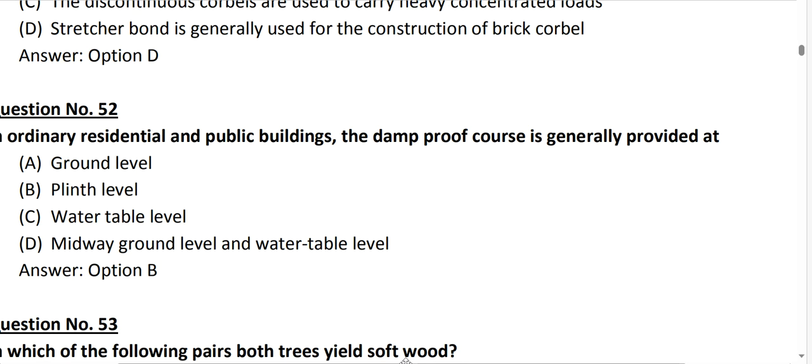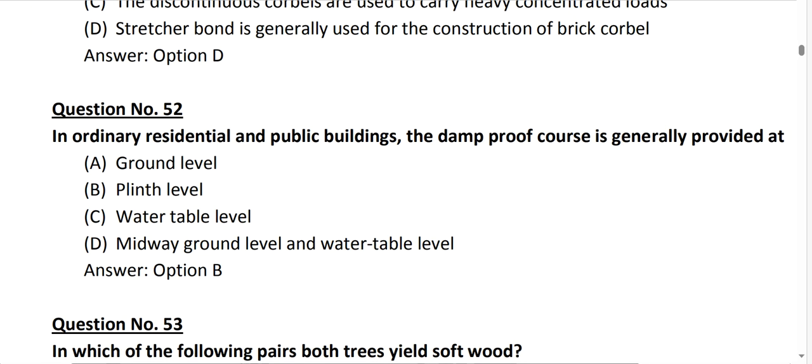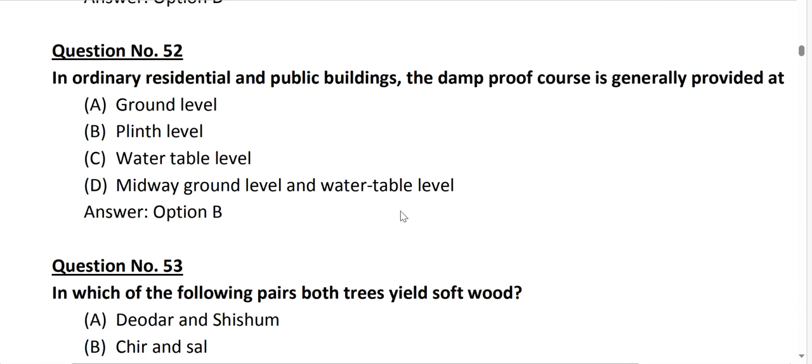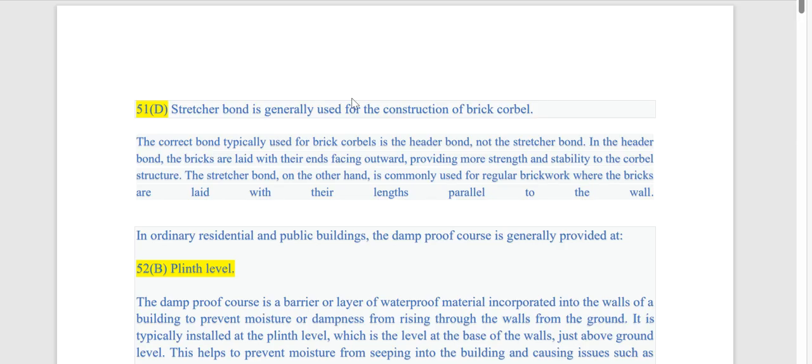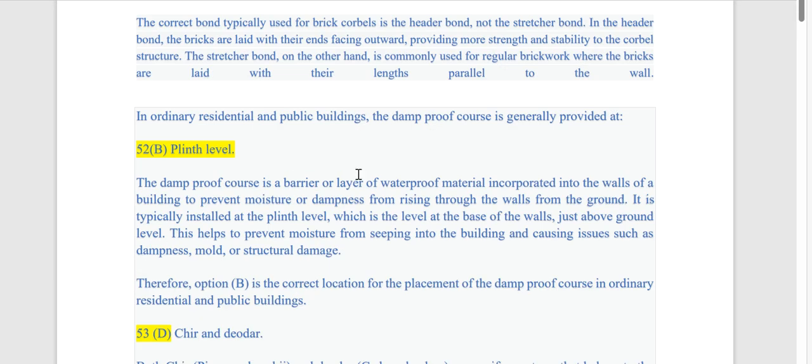In the header bond the bricks are laid with their ends facing outwards providing more strength and stability to the corbel structure. The stretcher bond on the other hand is commonly used for regular brick work. So the main reason is strength and stability combined.